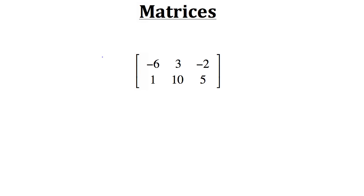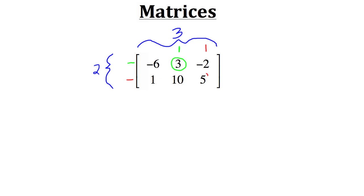This tutorial is on matrices. Matrices is the plural form for a matrix. A matrix is a collection of data or numbers that are organized into rows and columns. For example, a matrix with numbers organized into two rows and three columns. The individual numbers within a matrix are known as an element. For example, the element in row one and column two is three, and the element in row two and column three is five. Now that we have a basic understanding of what a matrix is, let's take a look at some of the basic operations that can be used with matrices.